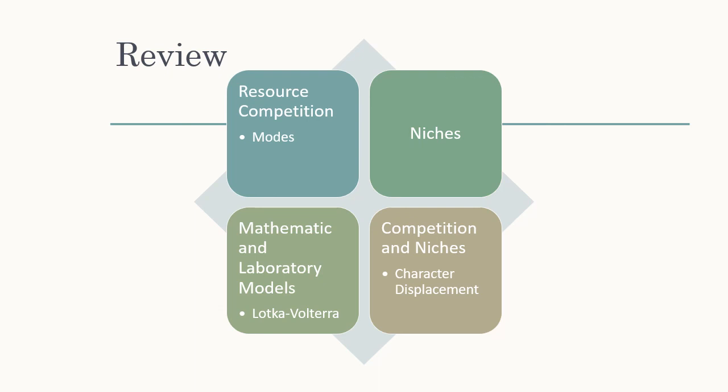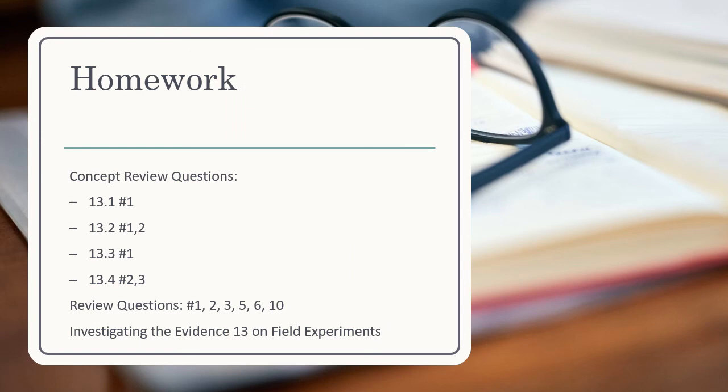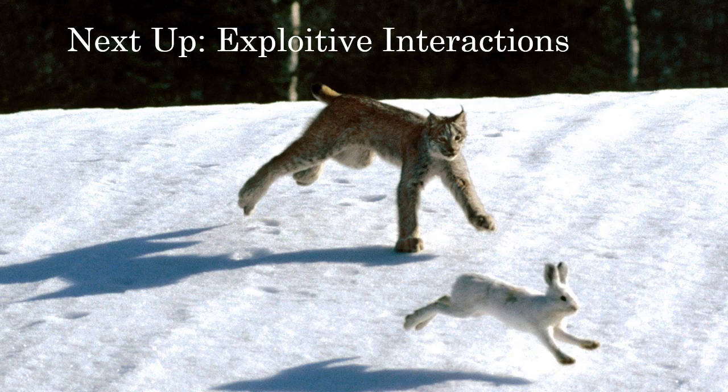For homework, answer the concept review questions at the ends of the sections and the review questions at the end of the chapter. Also take a look at Appendix A in the textbook — Investigating the Evidence — there is one on field experiments, which ties in well with the experiments covered in this chapter. Next up, we'll be talking about exploitive interactions where one species benefits from another that it's hurting, including Lotka-Volterra predator-prey relationships.